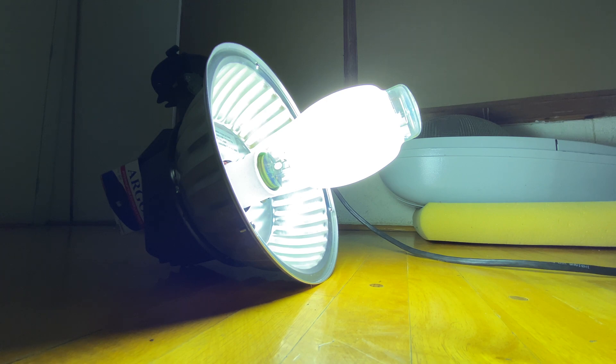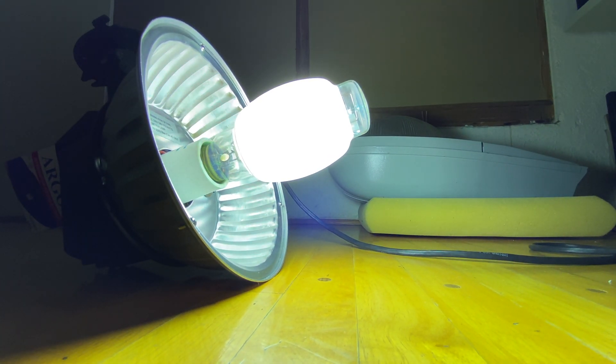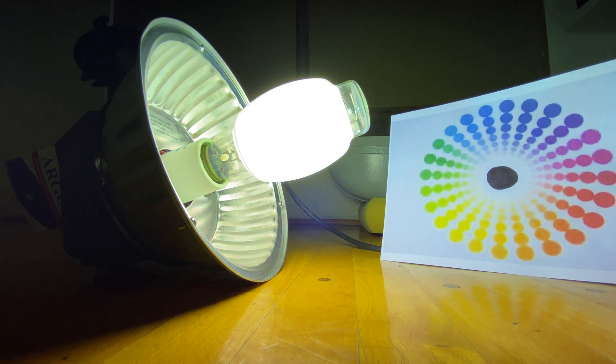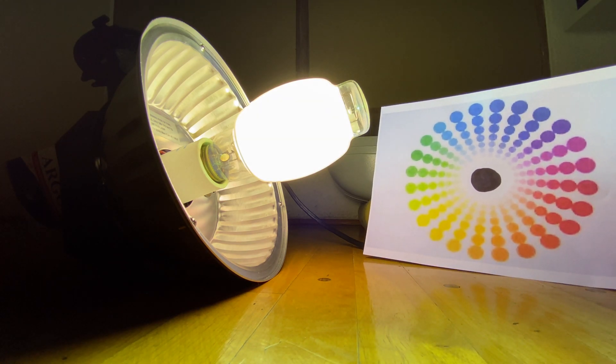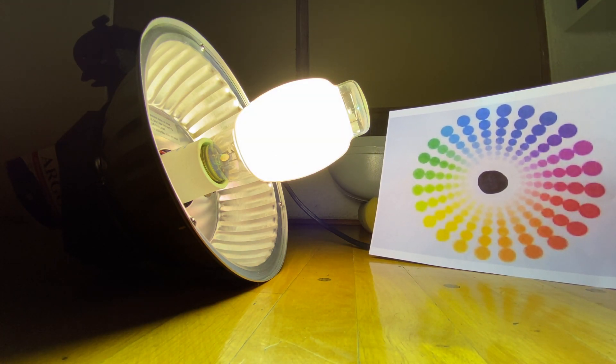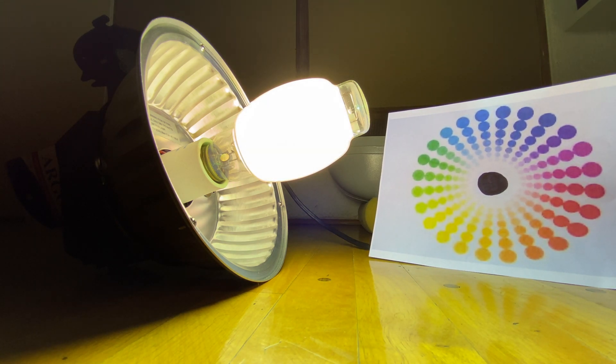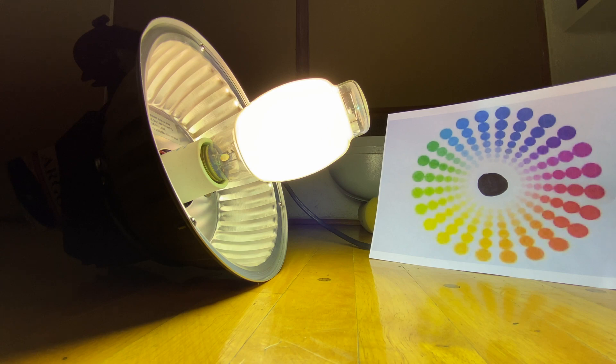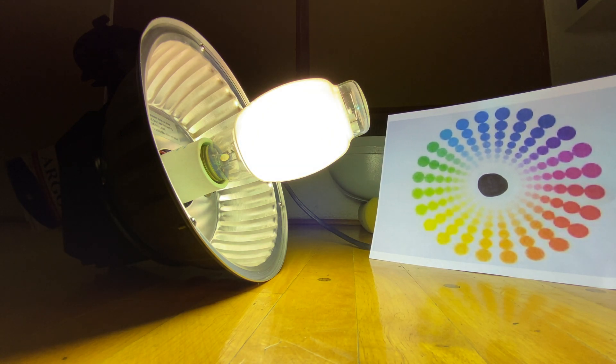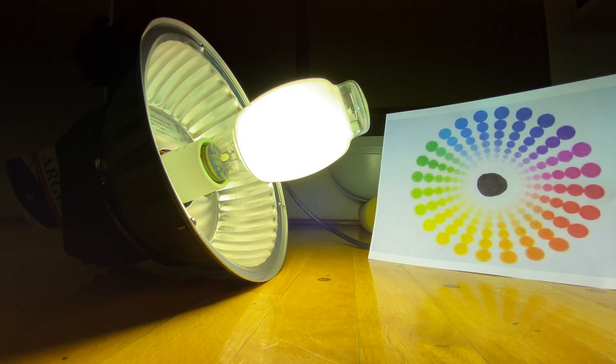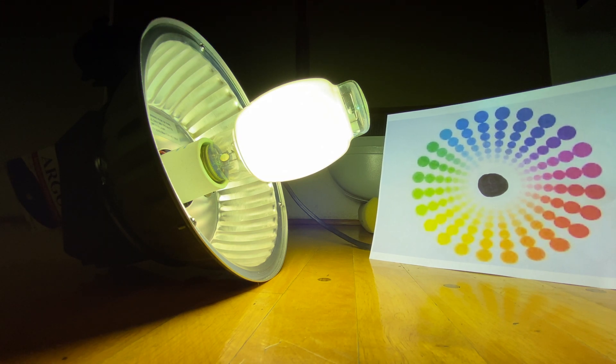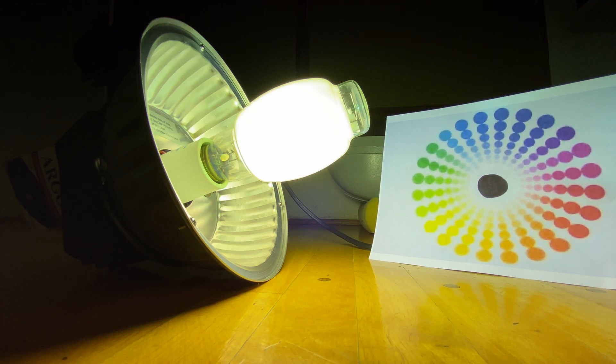As you can see, the bulb has reached full brightness. It has been burning for about 5 minutes now. Let's take a look at this color chart. As you can see, the color reproduction of the bulb is amazing. For example, the red tones, like from the blue to the orange, appear more artificial. I don't know how to describe it. It doesn't look really natural. It looks shiny. But anyway, the color reproduction of this phosphor is amazing.